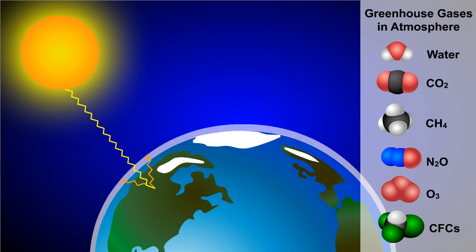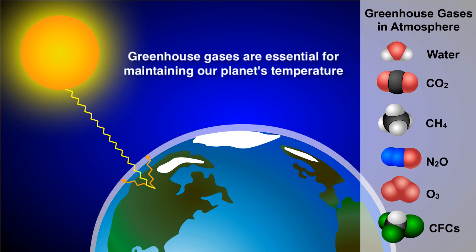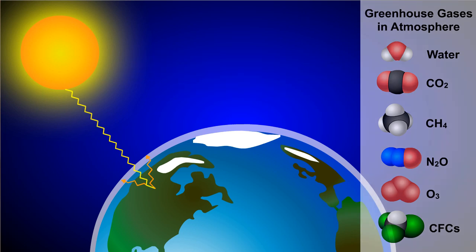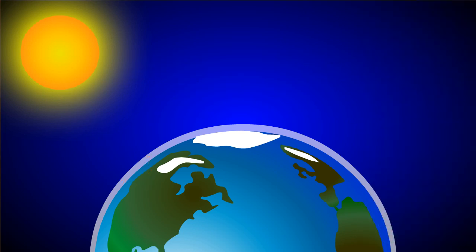It's important to realize that greenhouse gases play an essential role in the maintenance of our planet's temperature, helping it to stay within the limits that allow life to flourish. Normally, these gases are needed at very small concentrations, often in the magnitude of parts per million. In fact, if our atmosphere had fewer greenhouse gases, the majority of the water on the planet would exist as ice.